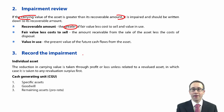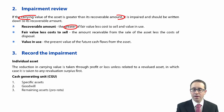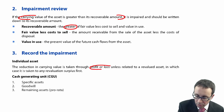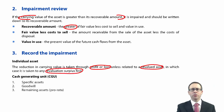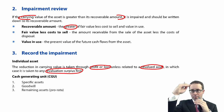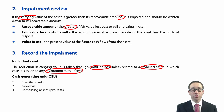Once we've considered the carrying value and recoverable amount and determined whether it is impaired, the issue is how we process the impairment. Any reduction is taken through profit or loss immediately, unless it is a revalued asset, in which case it goes to the revaluation surplus first. In an earlier example on revaluation, we revalued upwards and then there was a subsequent impairment that utilised all of the revaluation reserves, with any remaining impairment going through profit or loss.